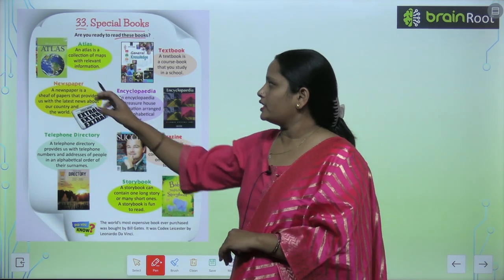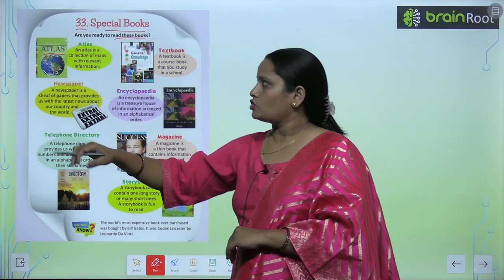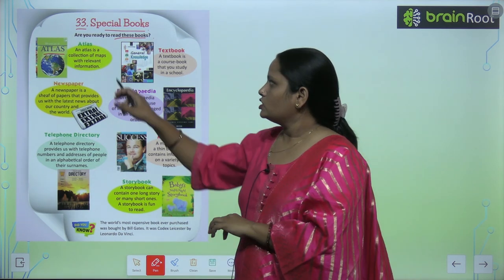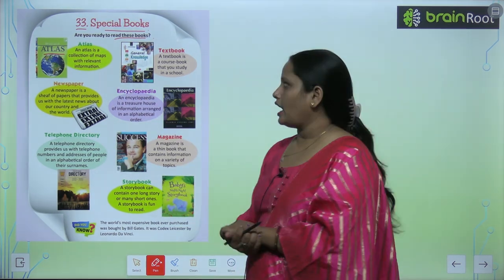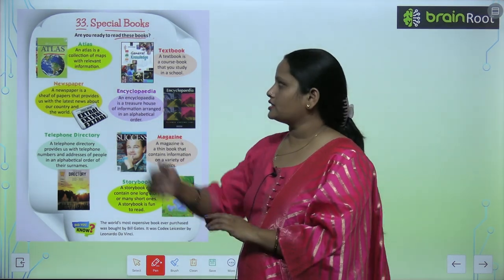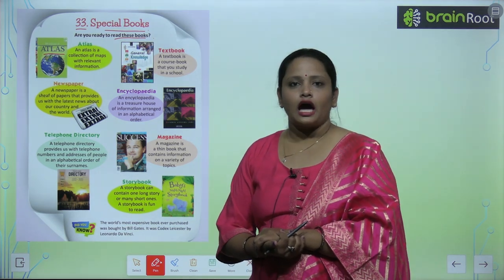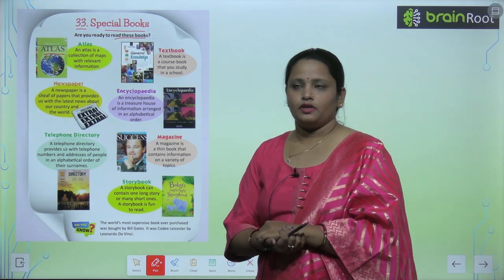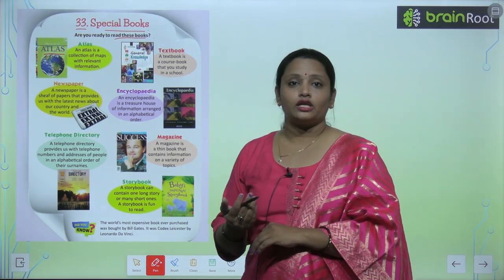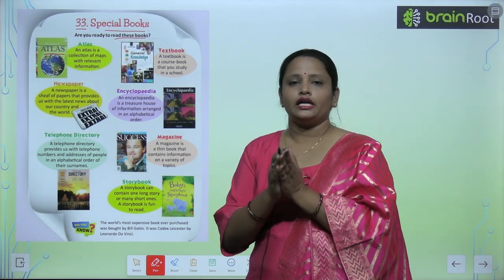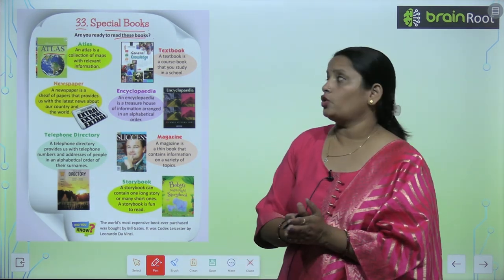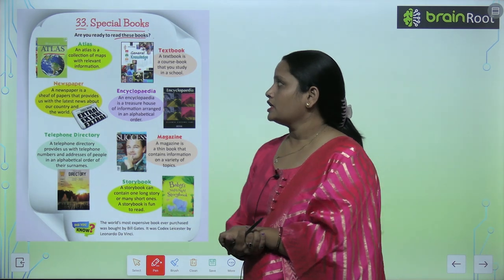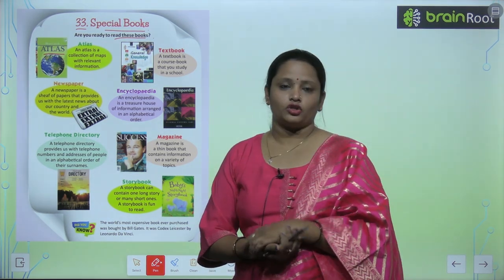The first one is Atlas. You can see in the book that Earth has been created. An Atlas is a collection of maps. If you see maps like India or Africa, all the maps have been put together in a book which we call an Atlas. An Atlas is a collection of maps with relevant information.